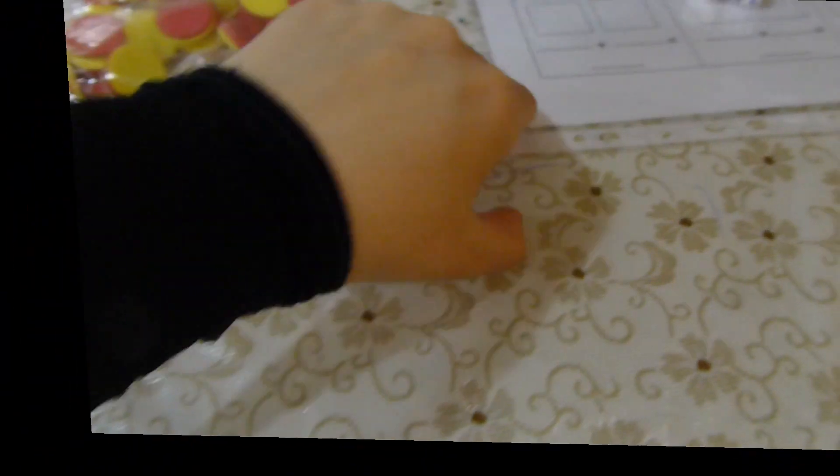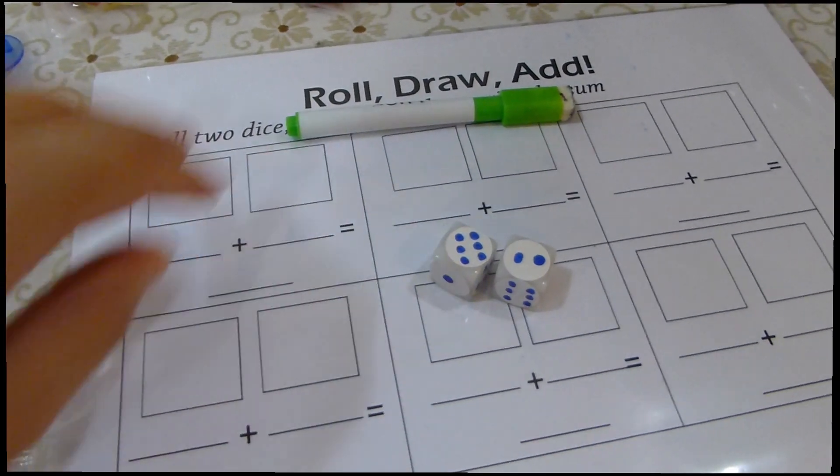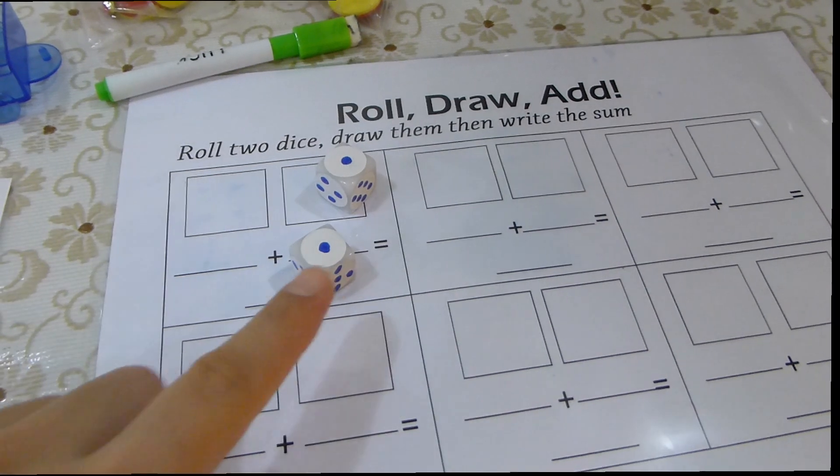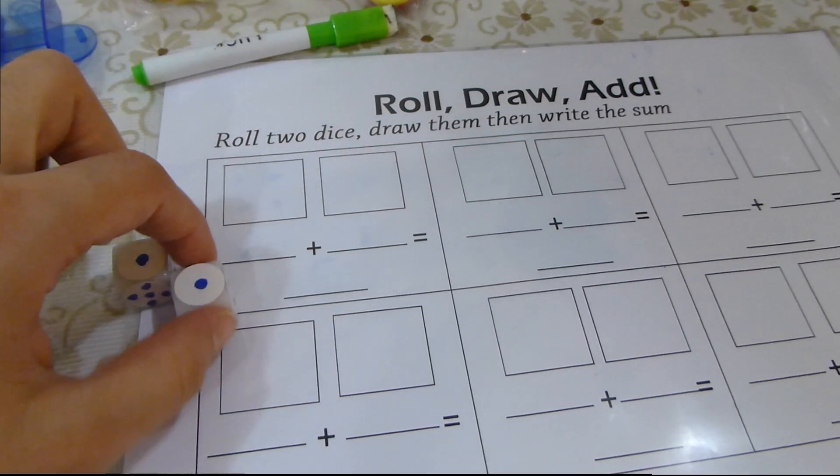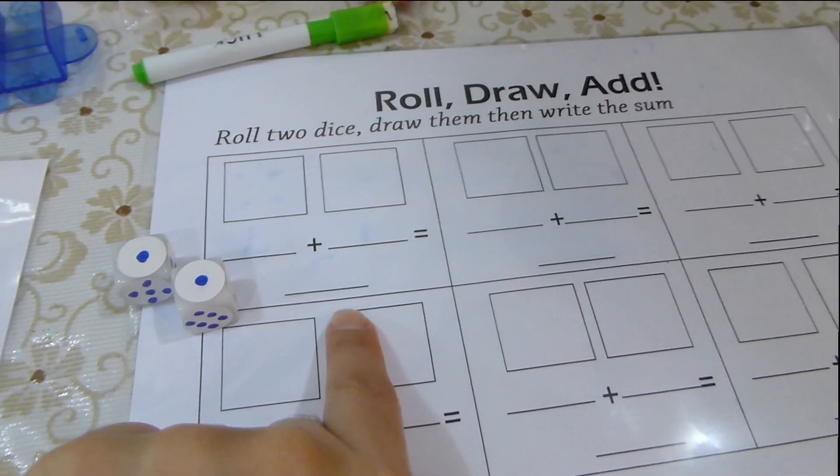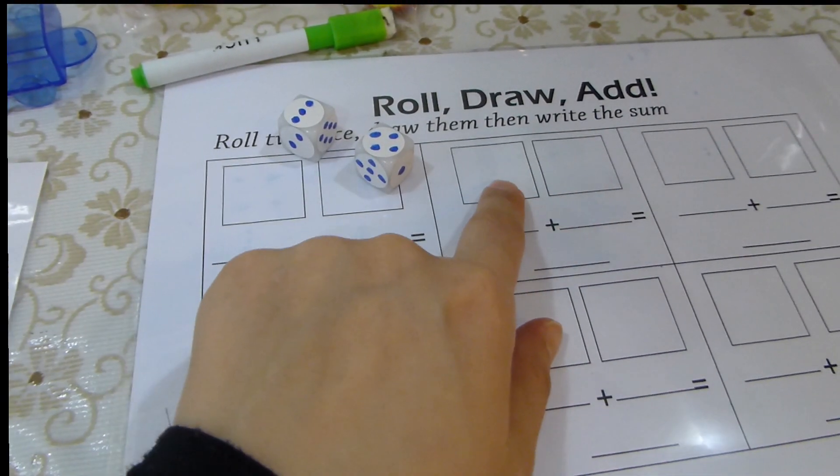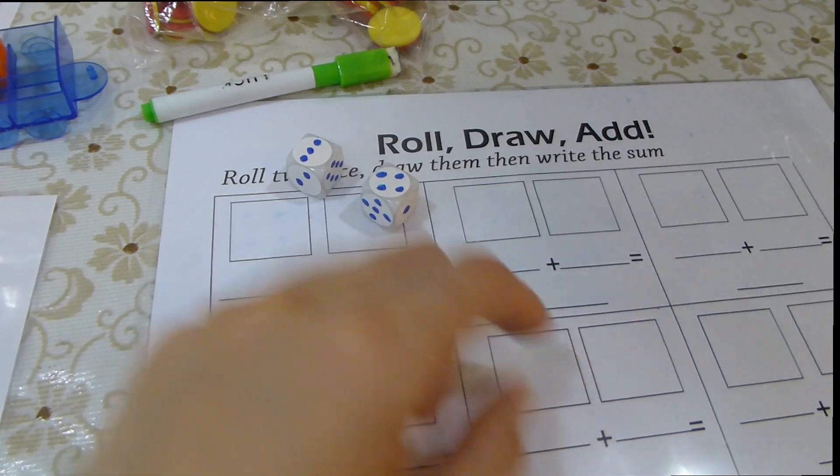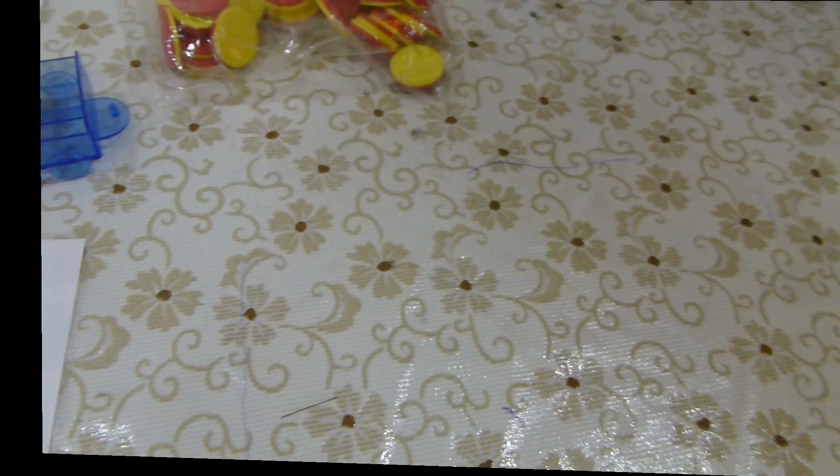The fifth game that I'll present today for you is called roll, draw, and add. The child will roll the dice and get the number. This is number 1. He will draw here 1 dot, 1 dot, write the equation down, 1 plus 1, and get the sum. 1 plus 1 equals 2. Then roll the dice again. 3 plus 4. He will represent 3 here, draw 3 dots here, 4 dots here, write down the equation, and find the sum. This is a very interesting game. They like it, and sometimes they can get two papers of this to make it like a group game.